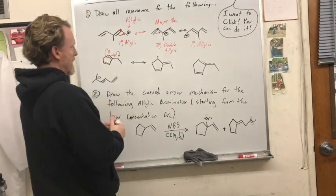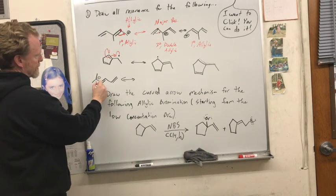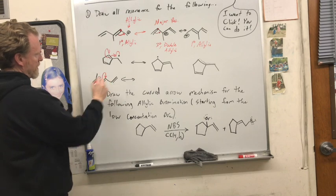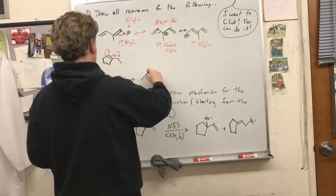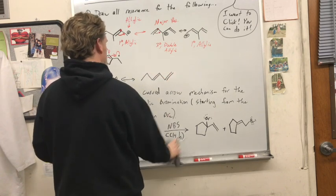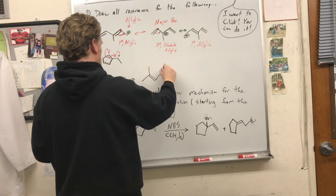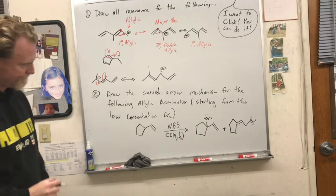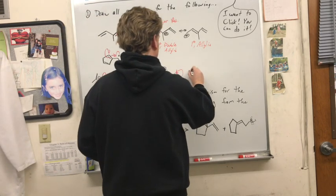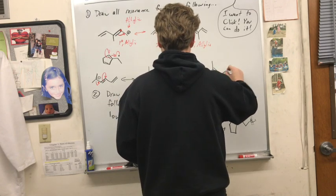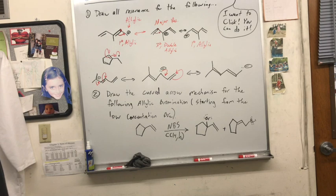And then finally the alkyne anion. That's an allylic alkyne — it can push the electrons that way and push this guy up onto that one. I'll keep going. And I think that's correct. Is it correct? Yeah, that's correct.